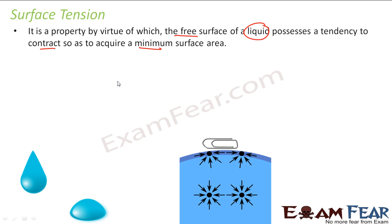It is the property of a liquid by the virtue of which it tends to contract to acquire minimum surface area. If there is a water molecule in the interior of the liquid, it is attracted equally on all sides — there is no net force on it. The same applies for interior molecules generally. But the molecule on the surface gets attracted and a net force exists.